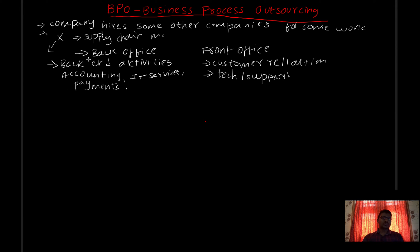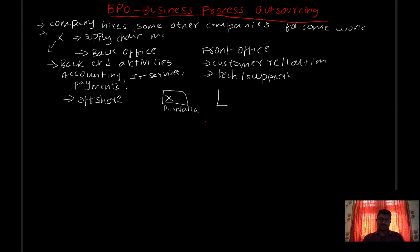Now let's look at the types of outsourcing. The first type is offshore outsourcing. Offshore outsourcing means we are working with companies in other countries. For example, a company is developing software in Australia, and in India we provide technical support for that software. So the development is in one country and the support is managed in another country — that is offshore outsourcing.